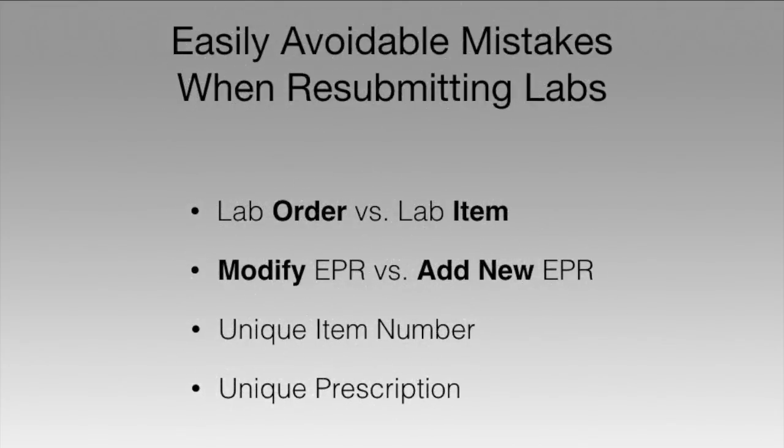Each lab order is comprised of an initial lab submission, which may be followed by resubmissions to correct any errors that may arise in the process. The following are easily avoidable mistakes which often occur when resubmitting a lab order. First, providers enter a new lab order when they should be adding a new lab item within the existing lab order. Second, providers modify a lab prescription instead of adding a new prescription. Finally, each resubmission to the lab requires a unique lab item number and a unique lab prescription form.